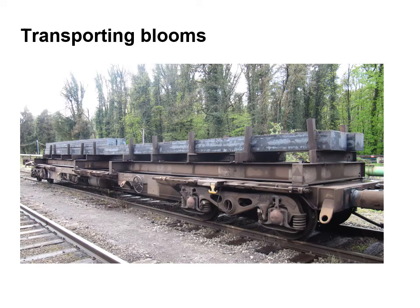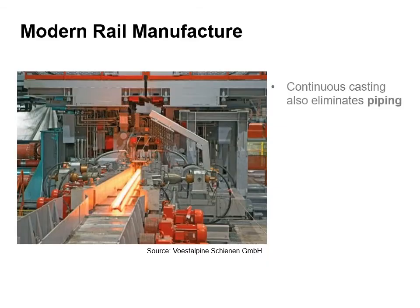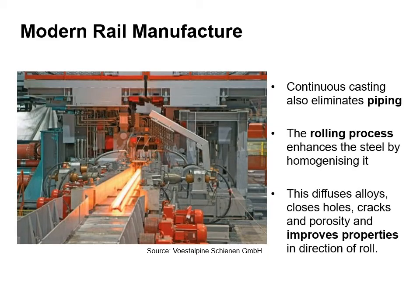This image shows steel blooms being transported by rail. The process of continuous casting also eliminates piping. The rolling process enhances the steel by homogenising it — this diffuses alloys, closes holes, cracks and porosity, and improves the properties in the direction of the roll.